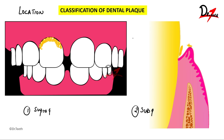We also have a third category: marginal plaque. If the plaque is formed right at the gingival margin, it is termed marginal plaque. So based on location, we can classify plaque as supra-gingival, sub-gingival, or marginal plaque.